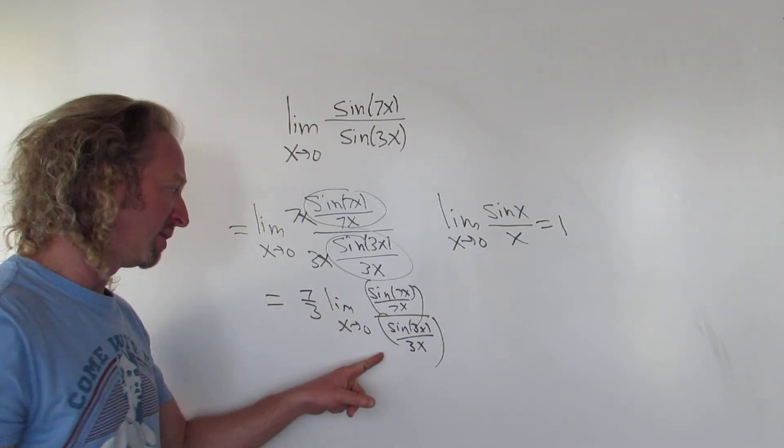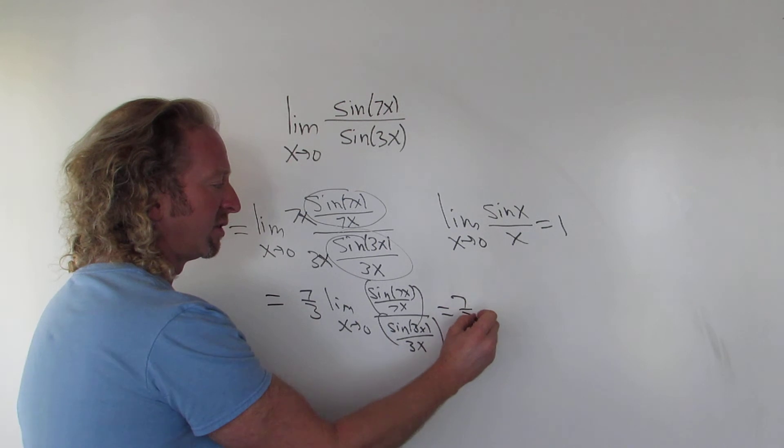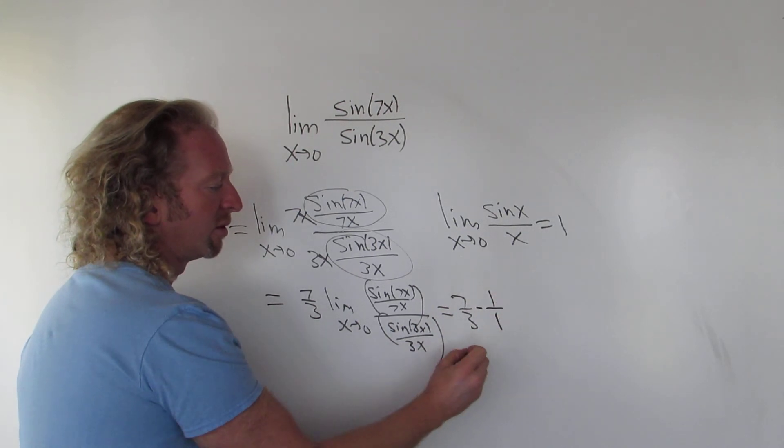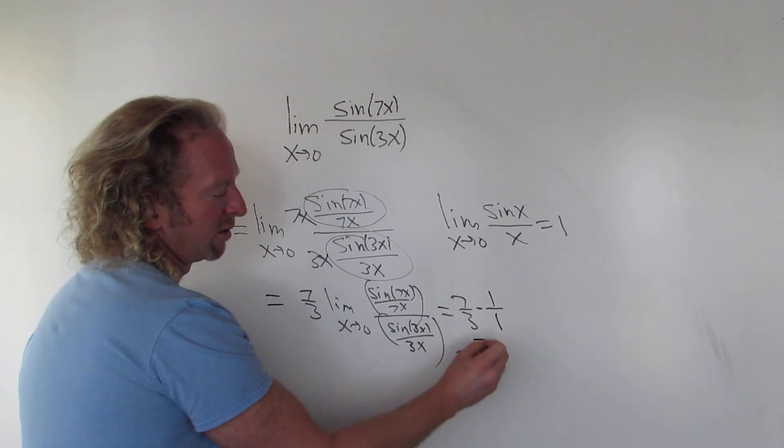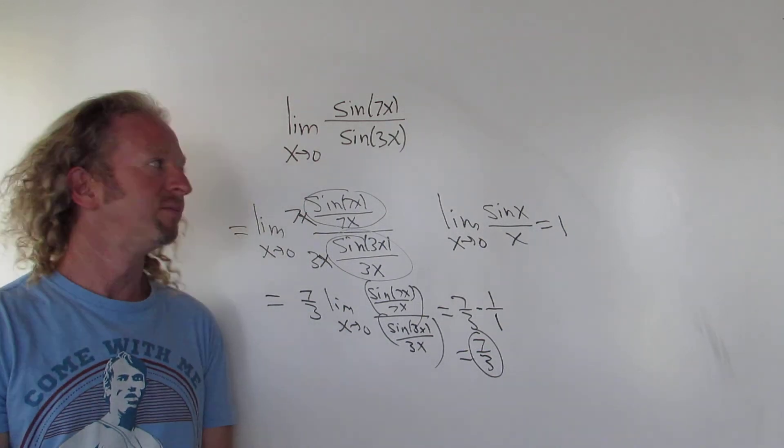So this limit here is 1, this limit here is 1. You end up with 7 thirds times 1 over 1, so you just get 7 thirds, which is the answer. That's it.